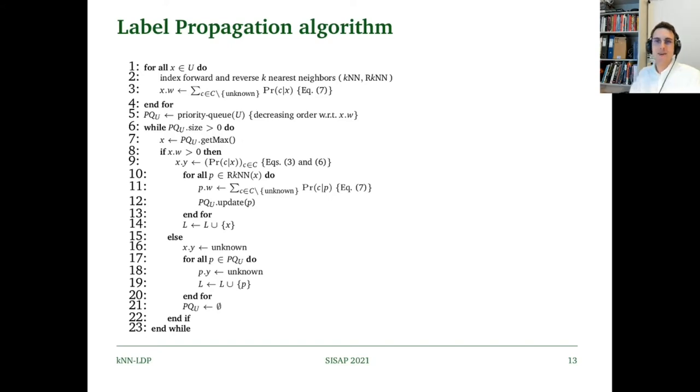And here we have our algorithm. For all unlabeled points X in U, we index the KNNs and the reverse KNN neighbors. A reviewer said this would be too computationally expensive, but when we index the KNNs, we can just add the query point as a reverse nearest neighbor to the points in its neighborhood. Thus, we don't need to do more than the cardinality of U neighborhood queries. While we go through those points, we update the weight.